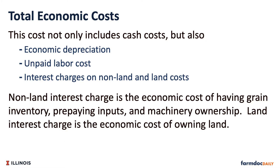Total Economic Costs. The total economic cost to produce corn and soybeans comes from FBFM cooperating farms. This cost not only includes cash costs, but also economic depreciation, unpaid labor cost, and interest charges on non-land and land costs. Non-land interest charge is the economic cost of having grain inventory, prepaying inputs, and machinery ownership. Land interest charge is the economic cost of owning land.